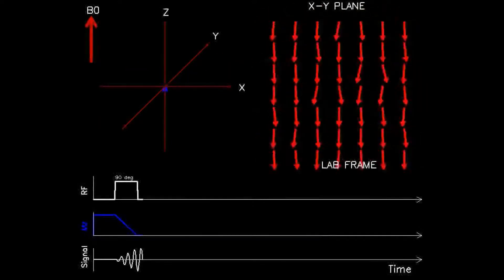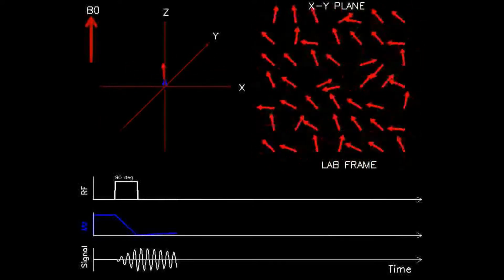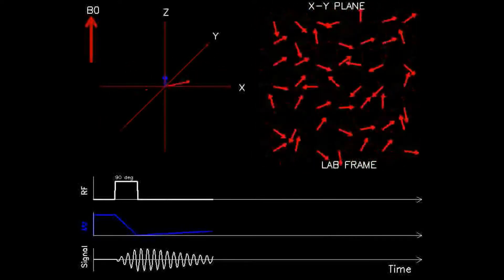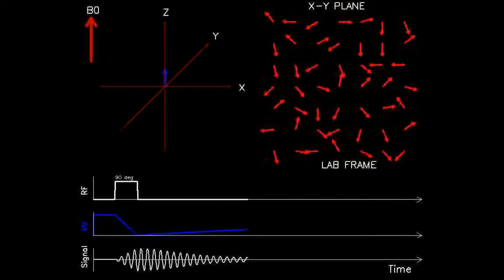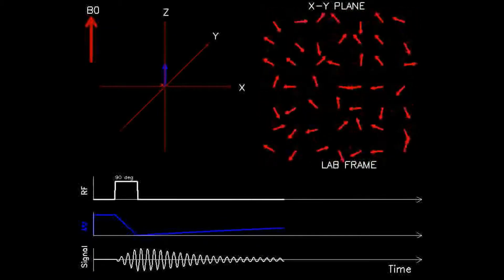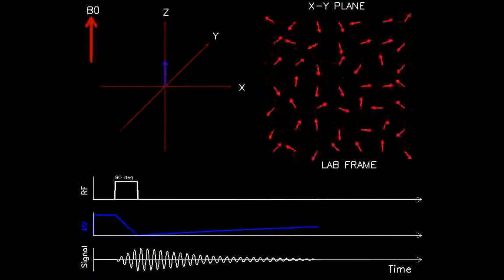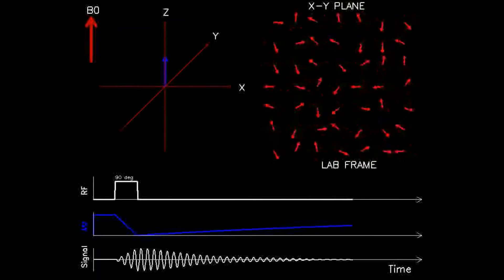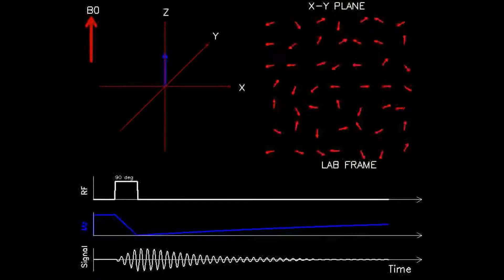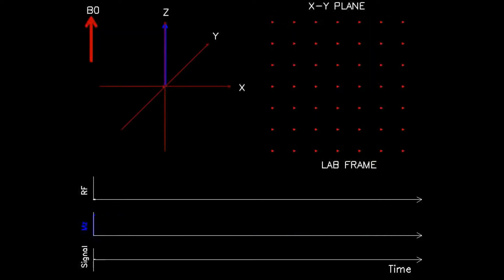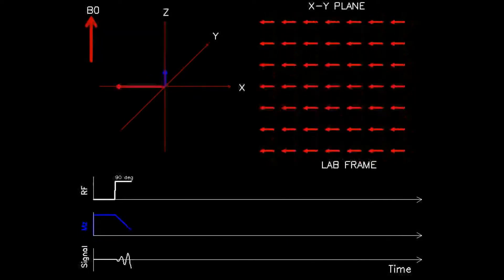As in the previous animations, the top right panel shows an array of 7 by 7 dipoles viewed along the z-axis in a lab frame. The top left panel shows a previously introduced 3D view of a vector, but this time it is not the vector of a single dipole, but the summation vector of all 49 dipoles. This distinction is important.